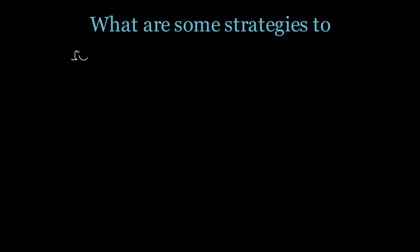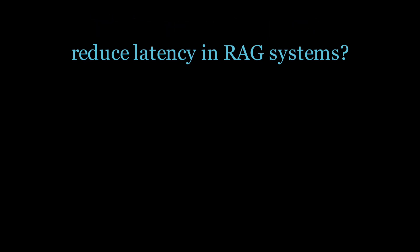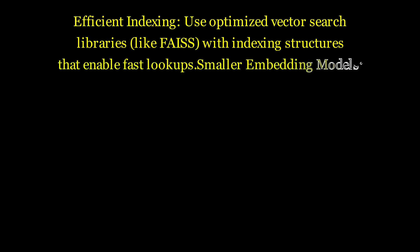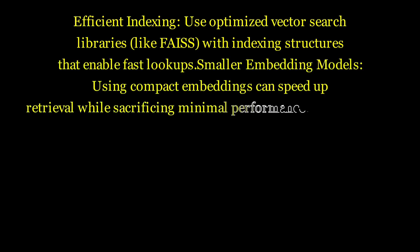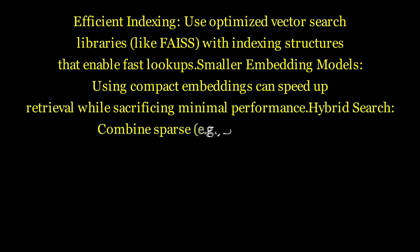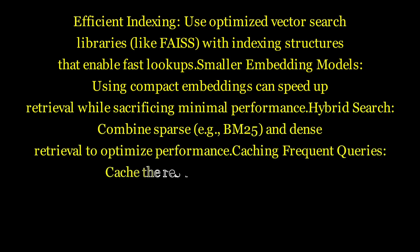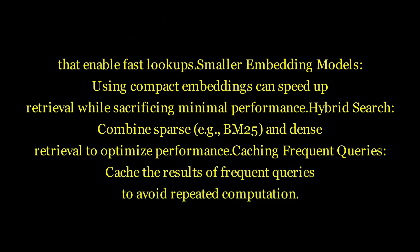What are some strategies to reduce latency in RAG systems? Efficient indexing uses optimized search libraries like FAISS with indexing structures that enable fast lookups. Using smaller, compact embedding models can speed up retrieval while sacrificing minimal performance. Hybrid search combines sparse, BM25, and dense retrieval to optimize performance. Caching frequent queries and caching the results of frequent queries avoids repeated computation.